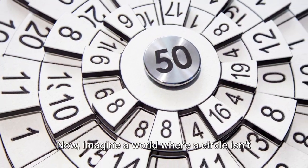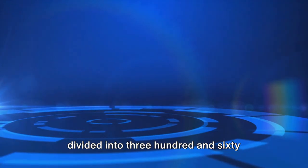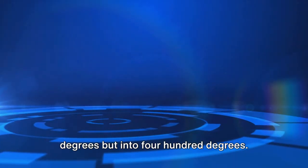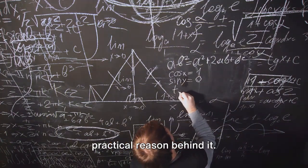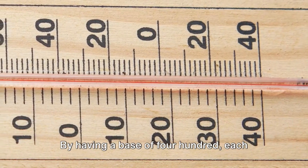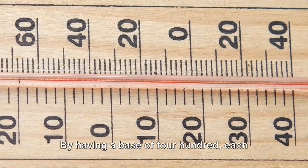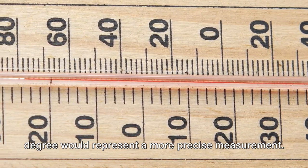Now imagine a world where a circle isn't divided into 360 degrees, but into 400 degrees. It might sound strange, but there's a practical reason behind it. By having a base of 400, each degree would represent a more precise measurement.